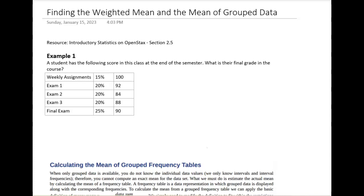So the exam scores, weekly assignment scores for the student are given in this table, and we want to know what their final grade in the course would be. The equation for this is given as the sum of xw over the sum of w. Now let's talk about what that means.